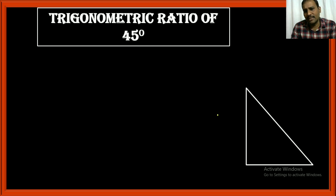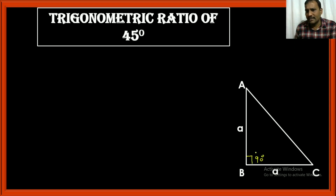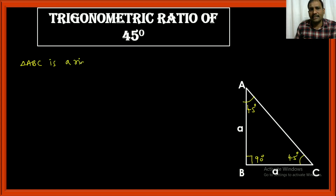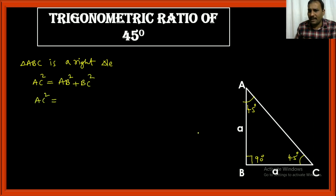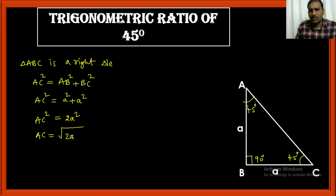For 45 degrees, take an isosceles right-angle triangle ABC where the equal sides are a and a, the right angle is 90 degrees, and the other two angles are each 45 degrees. From Pythagoras theorem: AC² = AB² + BC² = a² + a² = 2a². Therefore AC = √(2a²) = √2 · a.